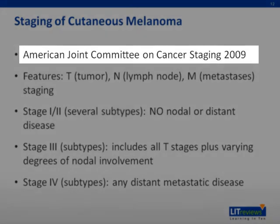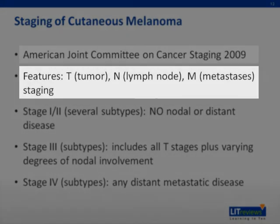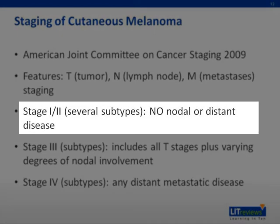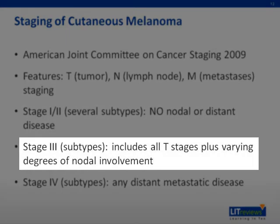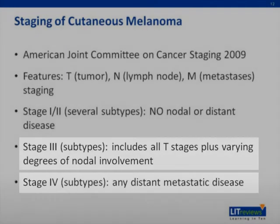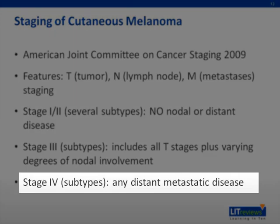The 2009 version of the American Joint Committee on Cancer staging for melanoma uses the T, N, and M approach. The system is very detailed, and each T, N, and M has several sublevels. In general, stage 1 or 2 cutaneous melanoma is confined to the region where the melanoma was identified with no evidence of spread. Stage 3 indicates some degree of nodal involvement or a pattern of local regional recurrence. And stage 4 indicates distant metastatic disease.